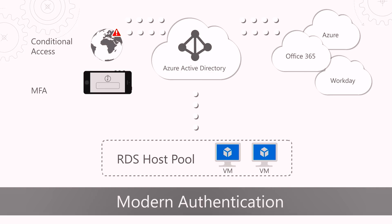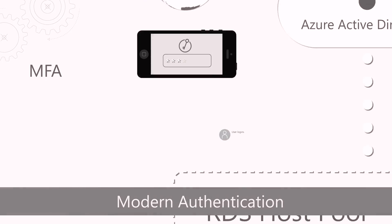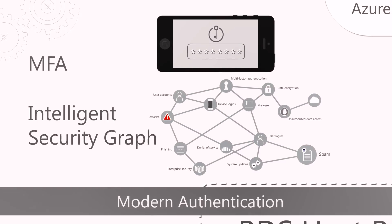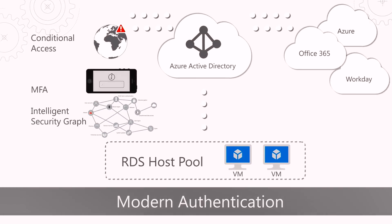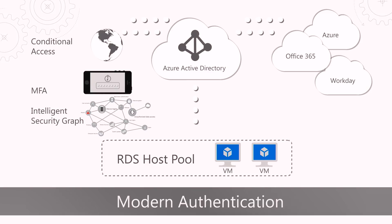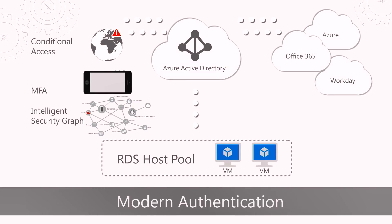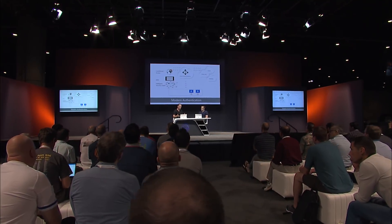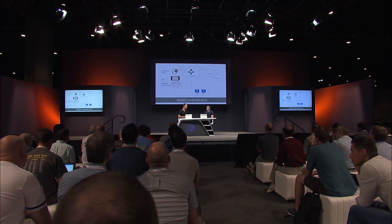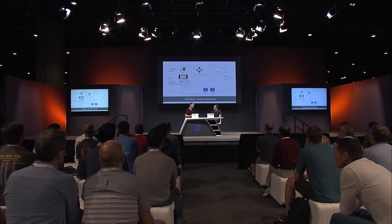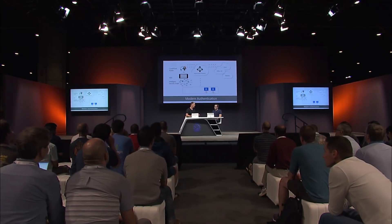If you have already got an Active Directory set up, you can leverage that with this new RDS modern infrastructure. We can also take inputs from the intelligence security graph. So if you're connecting up to a deployment and you have a non-enrolled device, we can dynamically assign conditional access policies.